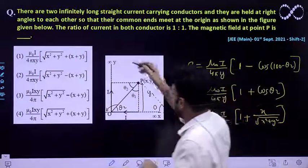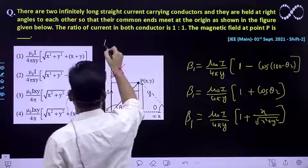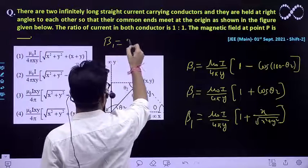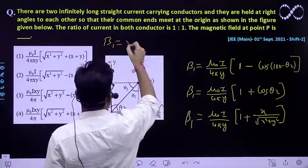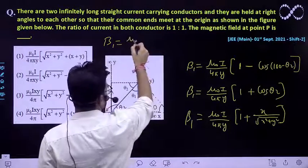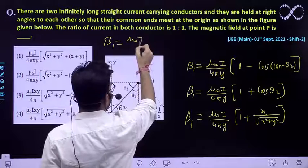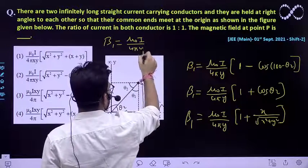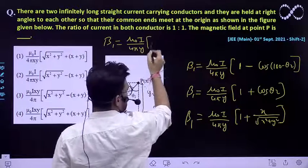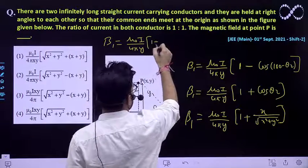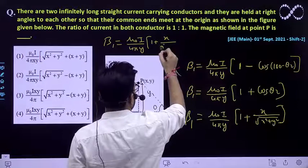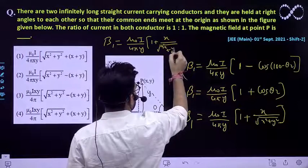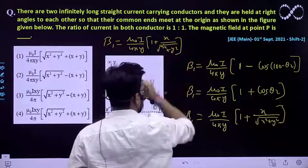So B₁ = μ₀I / (4πY) × (1 + X / √(X² + Y²)).